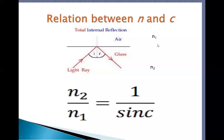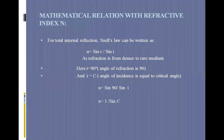Now we will discuss the relation between n and c, where n is the refractive index and c is the critical angle. From the diagram, the angle of incidence is the critical angle c, and the corresponding angle of refraction is 90 degrees. The relation is: n2 over n1 equals 1 over sine c.